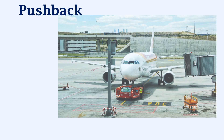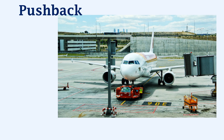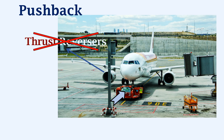First, we will look at pushback. Pushback is the procedure in which an aircraft is reversed or pushed backwards from an airport gate. Although most commercial jet aircraft are fitted with thrust reversers, they cannot be used for reversing the aircraft — they can only be used for reducing the speed of the aircraft.